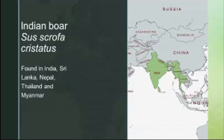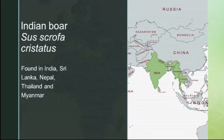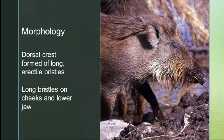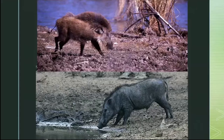They're distinct from other Eurasian boar species in their morphology. You can see they've got a dorsal crest or mane which runs along their backs, made of long erectile bristles. These bristles are also found on their cheeks and lower jaw, giving a bearded appearance. Unlike other species, they lack an underfur, so they have a thin, sparse covering, but you can still clearly see the dorsal crest — people call them razor backs because of this.